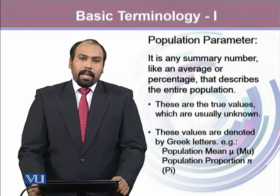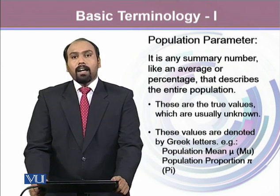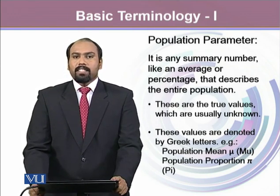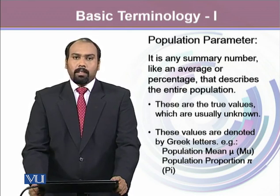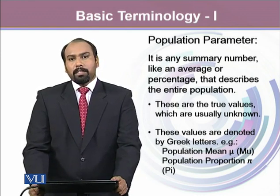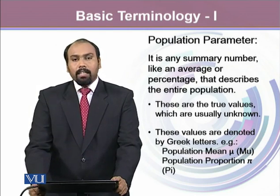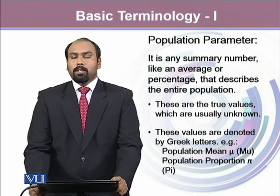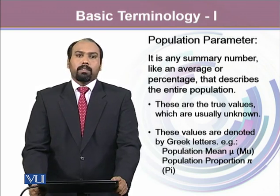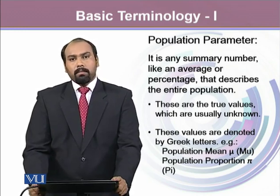Any value that originates as a result of studying a population is called a population parameter. These are the outcomes of the census. Population parameters are known as the true value, which do not change — they are constant. Population parameters are defined by Greek letters. For example, the Greek letter used to represent population mean is mu, and the Greek letter for population proportion is pi. Similarly, many Greek letters are used for different terminologies in statistical methods.